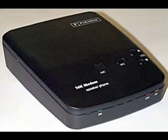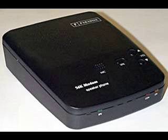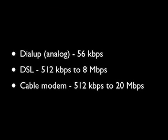A dial-up connection is pretty old school. You connect your computer to the ISP through a normal phone line, which wasn't designed to carry much data. A dial-up connection can accommodate as much as 56 kilobits per second — in our analogy, 56 boxes of data can arrive at once. Pretty slow. In addition, a dial-up connection ties up your phone line so it can't be used for calls.